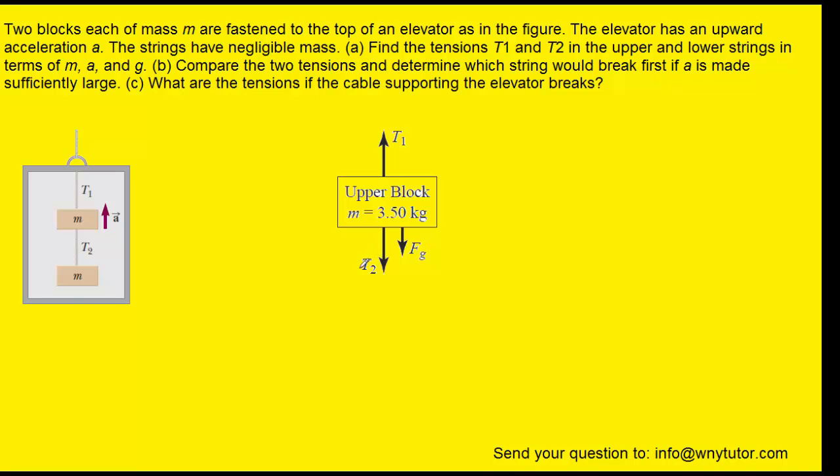Let's take a look at the free body diagram of the lower block. The lower block also has a gravitational force acting downward on it that we've labeled F sub g. And we can see from the diagram that the lower block is only connected to one rope, which is pulling that block upward. And so we have labeled a force T2 showing that force directed upward.